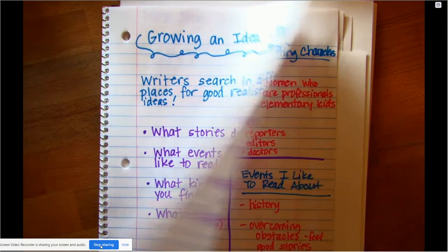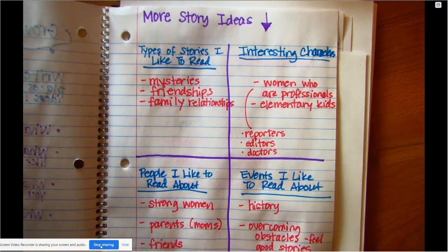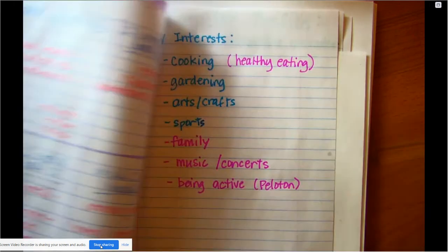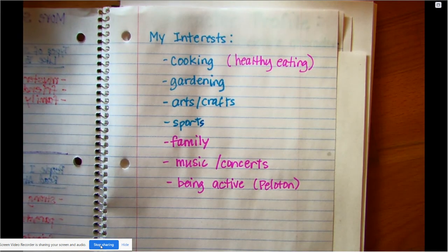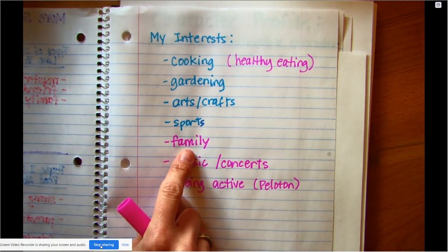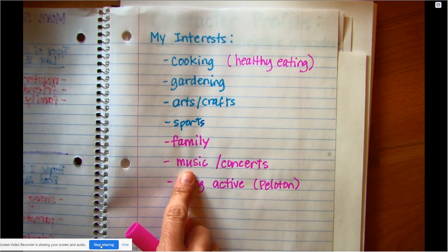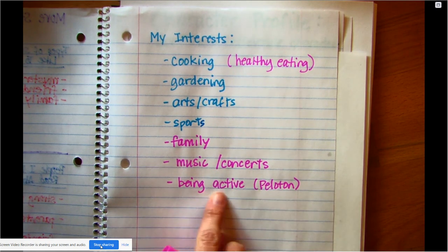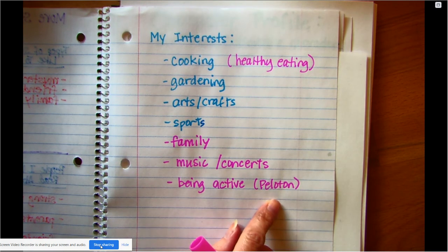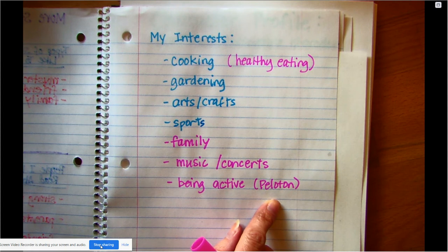I just wanted to point out to you, make sure that as a writer, you go back and you add to your story ideas. I added a few more on my interests: family, music and going to concerts, being active. So I could have that be part of my story. We have a Peloton at our house, which is a bike that we can ride inside, so that's important to our family.